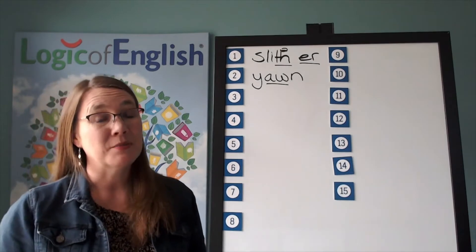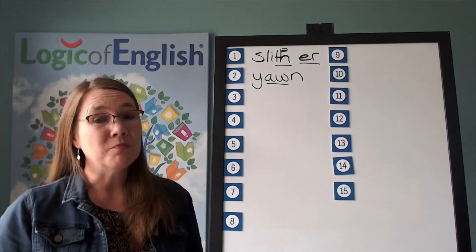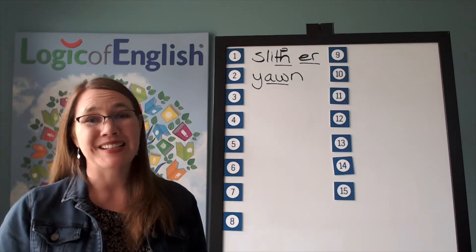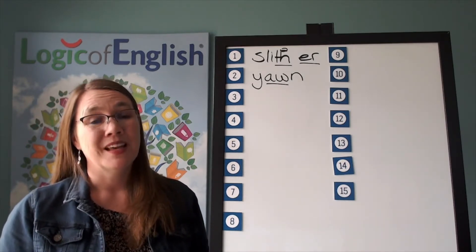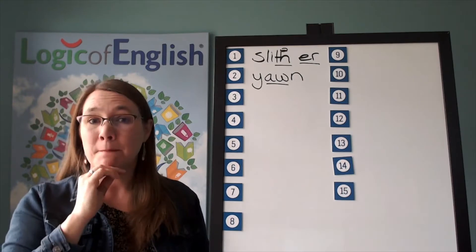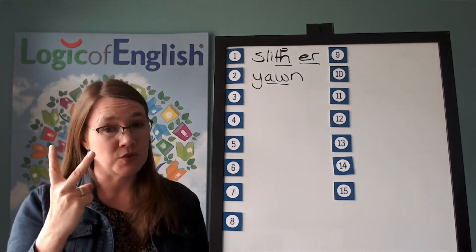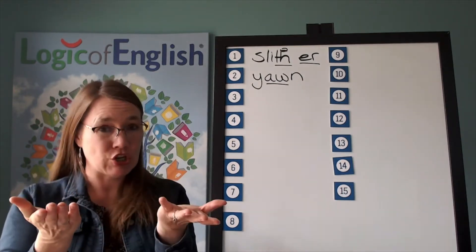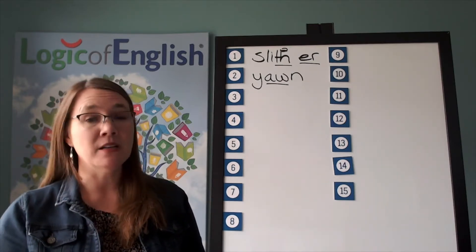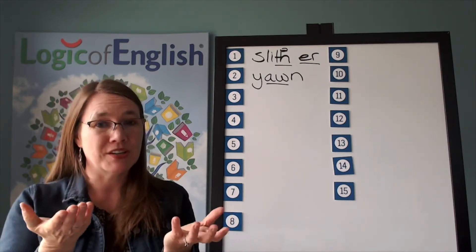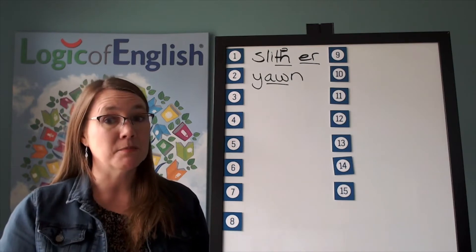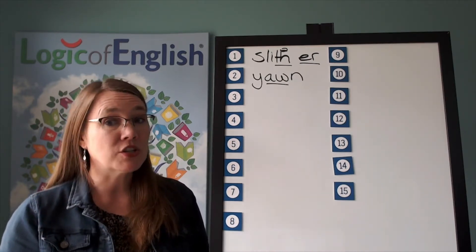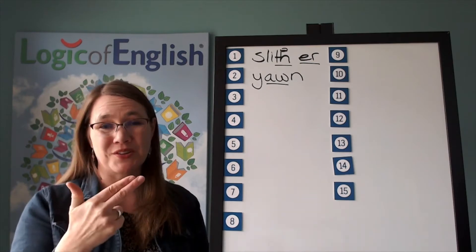The next word is mutter. I heard her mutter but I didn't hear what she said. Mutter. Go ahead and say mutter. How many syllables? Two. We will say to spell mutter. Let's sound it out. The first syllable is mutt: m-u-t. The second syllable is tur — use the er of her. Go ahead and write mutter.